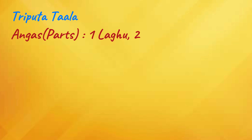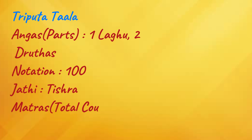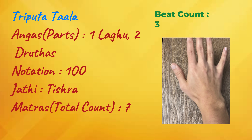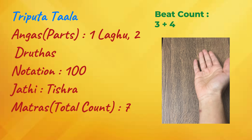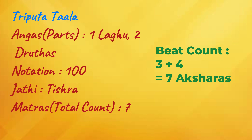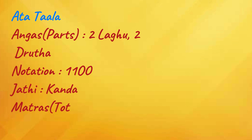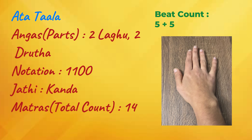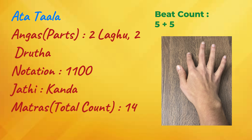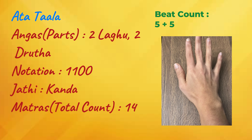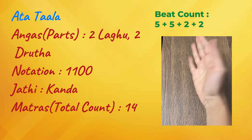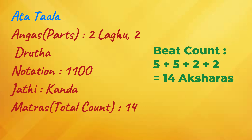The fifth Tala is called Triputa Tala. The Angas of Triputa Tala are one Laghu and two Dritas. The Laghu of Triputa Tala is put in Tishra Jati, making a total of seven Aksharas. The sixth Tala is called Atta Tala. The Angas of Atta Tala are two Laghus and two Dritas. The Laghu of Atta Tala is put in Khanda Jati, making a total of 14 Aksharas.